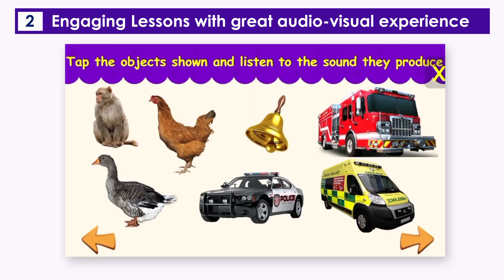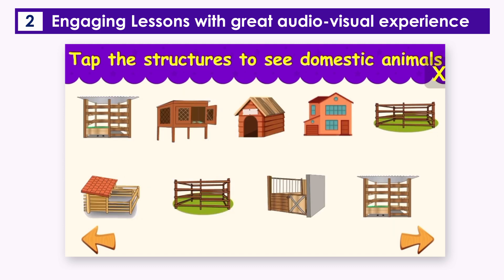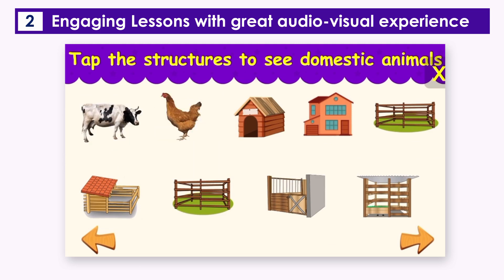Tap the objects shown and listen to the sound they produce. Tap the structures shown to see domestic animals: cow, chicken, dog.